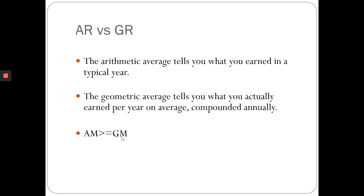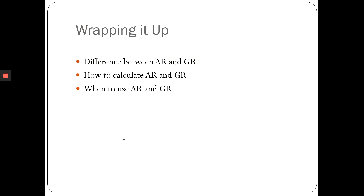To recap what we've learned: the geometric return is the actual return you have earned annually over the particular investment period, while the arithmetic return indicates what return you would likely get in a typical year or on average — for example, as an estimate for the next year. Thank you.